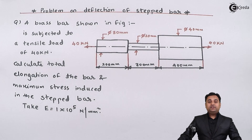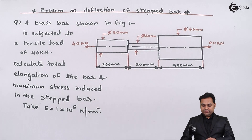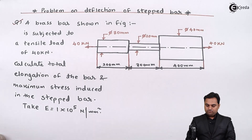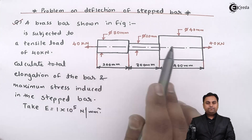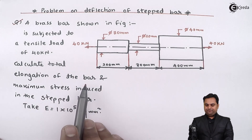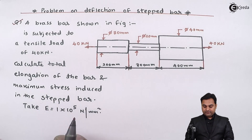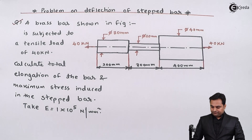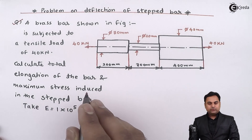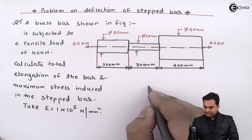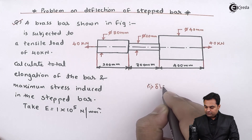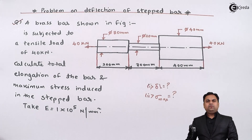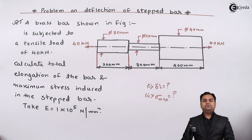Hello friends, in this video we are going to see a problem on deflection of a stepped bar. A brass bar shown in the figure is subjected to a tensile load of 40 kilonewton pull-type load. We need to calculate the total elongation of the bar and the maximum stress induced in the stepped bar. Young's modulus E is given as 1×10⁵ N/mm². We have to find total elongation and maximum stress, denoted sigma max.